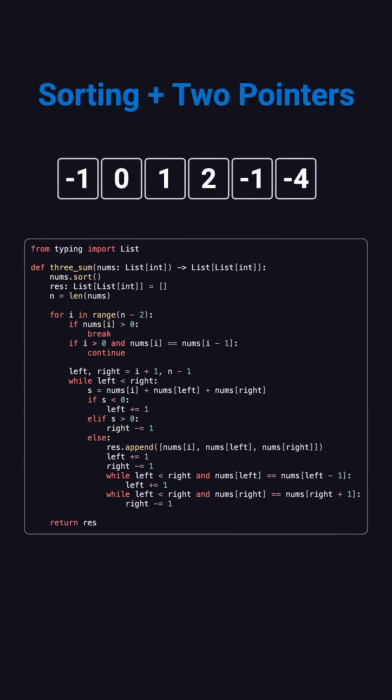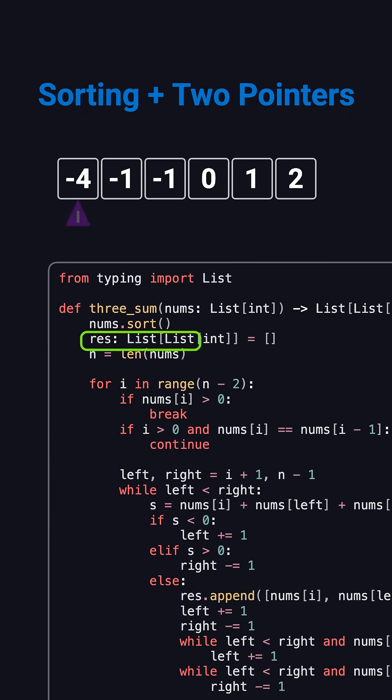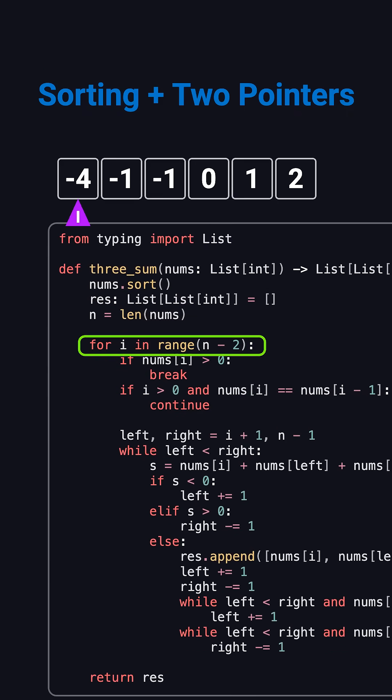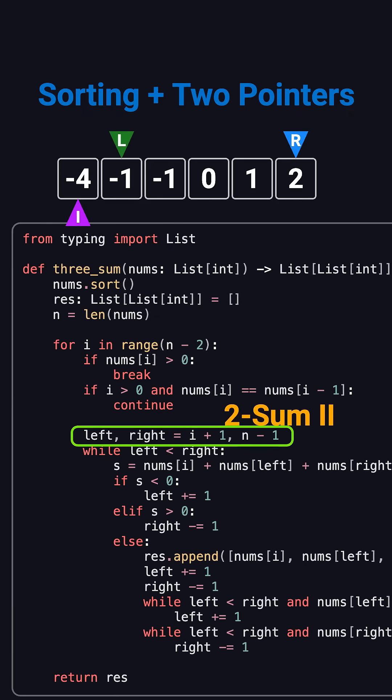The most common solution uses sorting and the two-pointer technique. We first sort the array, then fix one number at index i. The remaining part becomes a two-sum problem on a sorted array, solved with a left and a right pointer.